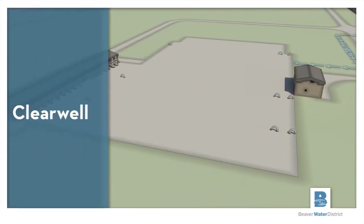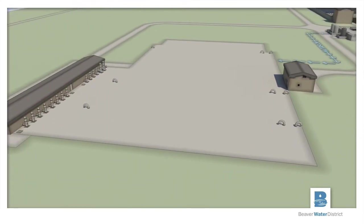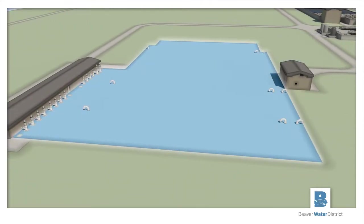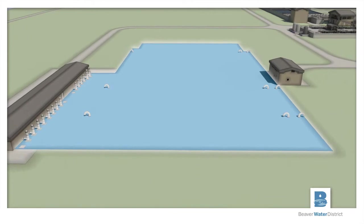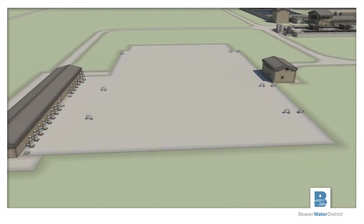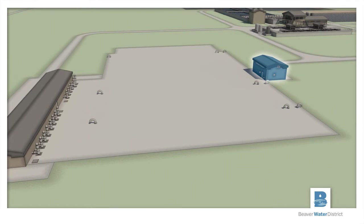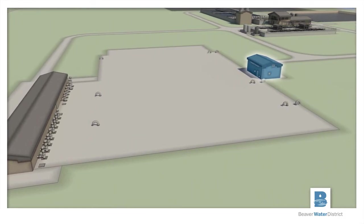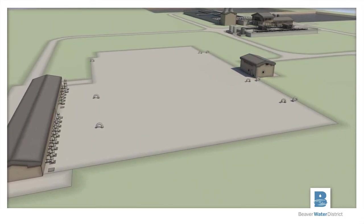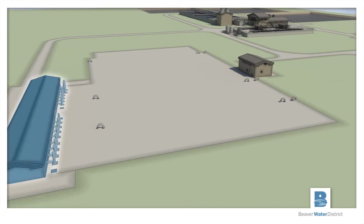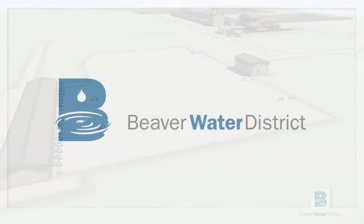The filtered water is stored in a large underground concrete reservoir known as a clear well. This tank holds approximately 12 million gallons of water. As the water enters the clear well, fluoride is added to promote dental health. Finally, clean, pure water in the clear well is delivered to our customer cities by high service pumps.